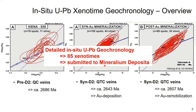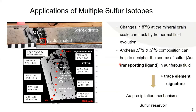To leave the in-situ uranium-lead geochronology story: we dated 85 xenotime grains with SHRIMP together on the laser, and that work has been submitted to Mineralium Deposita in mid-March. This brings me to the second major block of my PhD thesis, which tries to better characterize the geochemical constraints of gold mineralization at the camp scale.